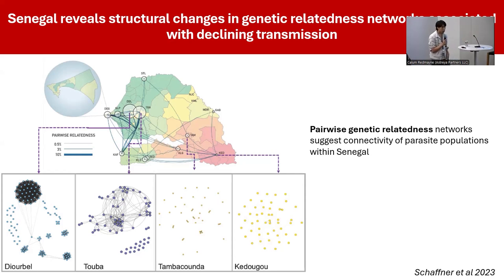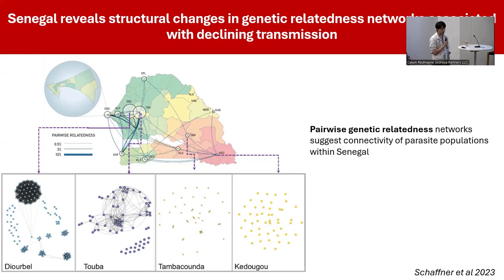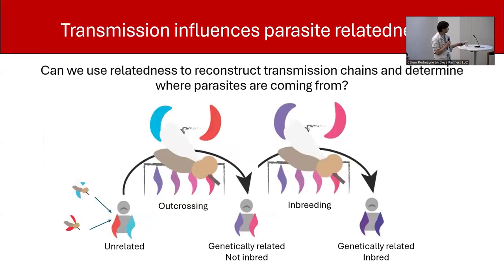The question I wanted to ask is: can we take this information and actually reconstruct a transmission chain? Can we use the genetic relatedness of the parasite to really understand which infection gave rise to what other infection, and therefore start addressing serious questions about where infections are coming from — are they local or imported? Can we use genetic relatedness to reconstruct transmission chains and determine where parasites are coming from using just this one genetic metric?